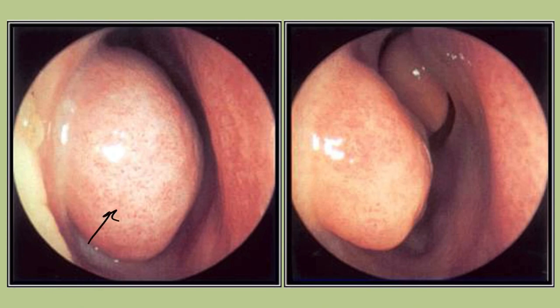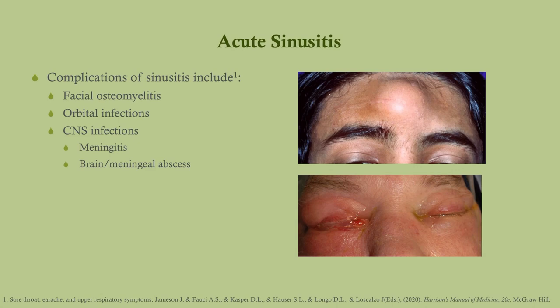Here you can see the turbinates in the nose. On the left, this is sinusitis before treatment — the inferior turbinate is swollen. After giving a decongestant spray, it got much smaller, clearing the passage. This makes you less likely to develop a bacterial infection or more likely to clear an existing one. You can now visualize the middle turbinate, confirming the inferior turbinate has shrunk down significantly.